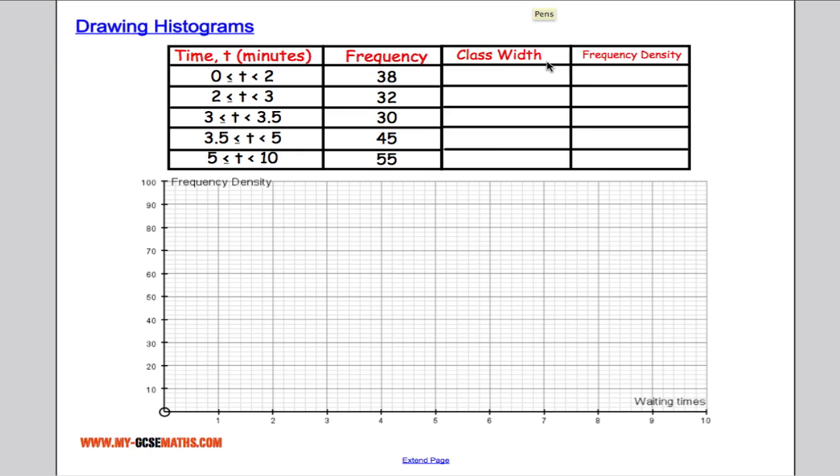So we added in these two extra columns, a class width and a frequency density column. So we're going to work out the class width for each one. The class width for this interval is 2, so we do 2 take away 0 which is 2. 3 take away 2 tells me this class width is 1, this is 0.5, this is 1.5 and this one is 5. And the frequency density is calculated by doing the frequency divided by the class width.